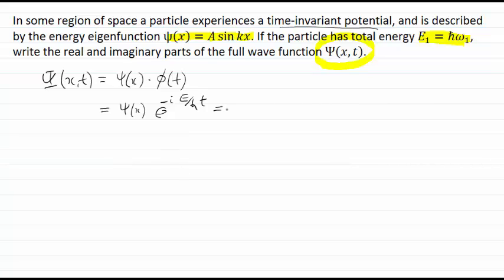And so we can now write this out in a little bit more detail. Our energy eigenfunction we're told is capital A sine kx. And we can write now for our time dependent function here, e to the minus i. Now the energy divided by h bar for us up here will just be omega 1 when we divide through by h bar multiplied by time.